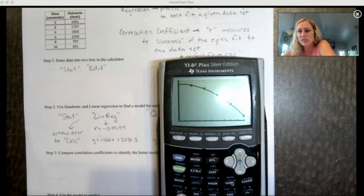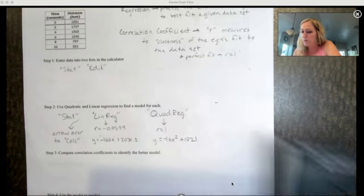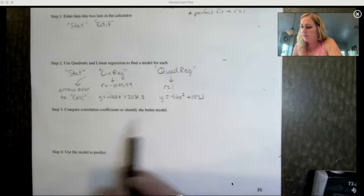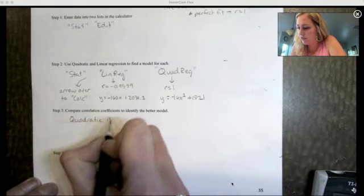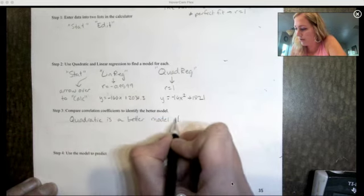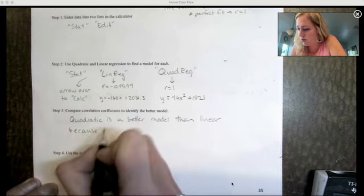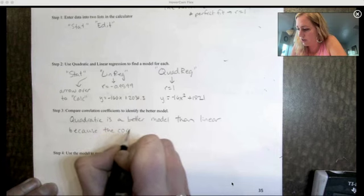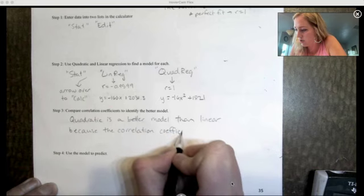The correlation coefficient is a measurement of how close the equation fits the data. The closer it is to one, the better fit it is. If it's exactly one it's a perfect fit like it is in this case. It says compare the correlation coefficients and identify the better model. We're going to say quadratic is a better model than linear because the correlation coefficient equals one.